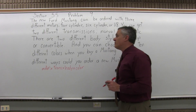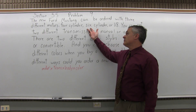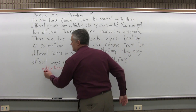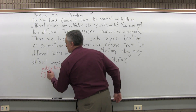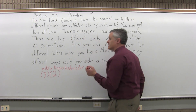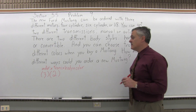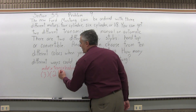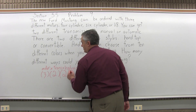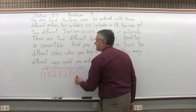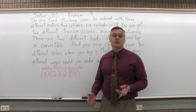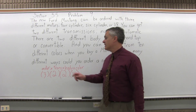For the motor, the choices are four-cylinder, six-cylinder, V8 — that's three choices. To choose the transmission, you have two choices, manual or automatic. To choose the body of the car, there are two choices, hardtop or convertible. And then there are ten colors. So if you multiply those numbers together, you'd get the total number of different ways you could order a new Mustang.